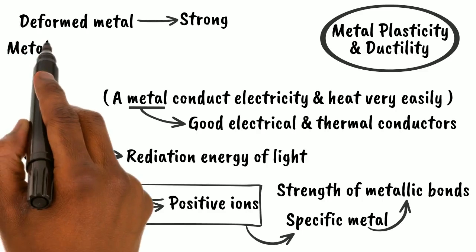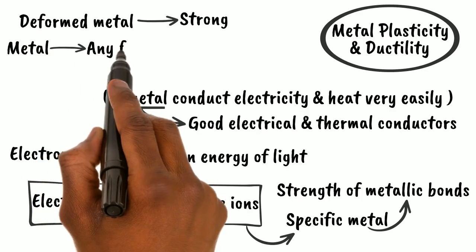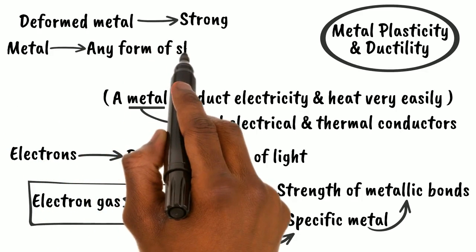That is why a metal can be fabricated to any form of shape using various shaping processes.